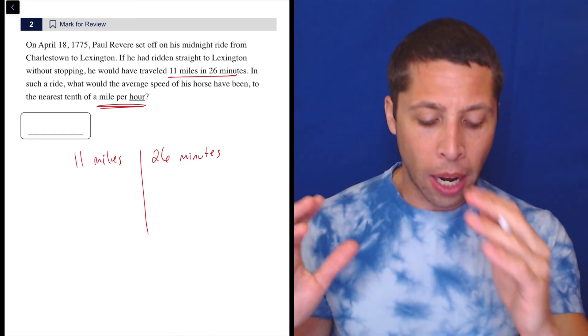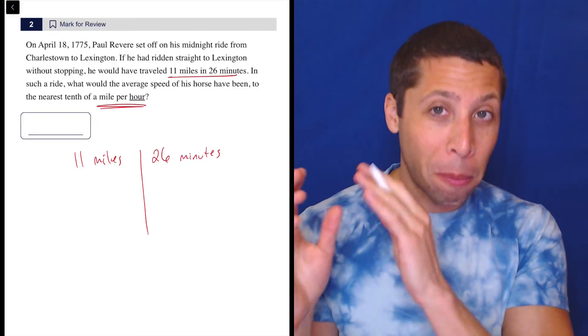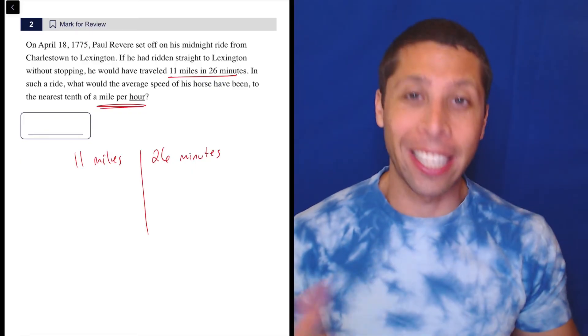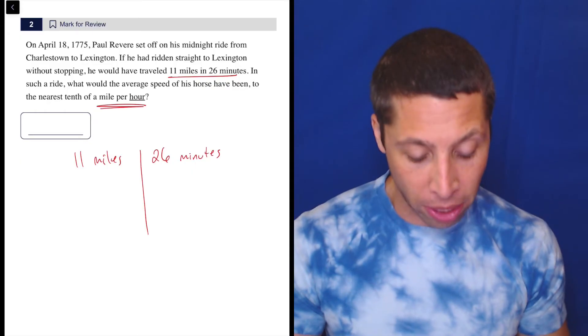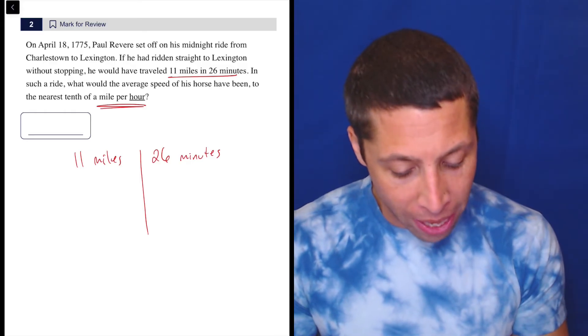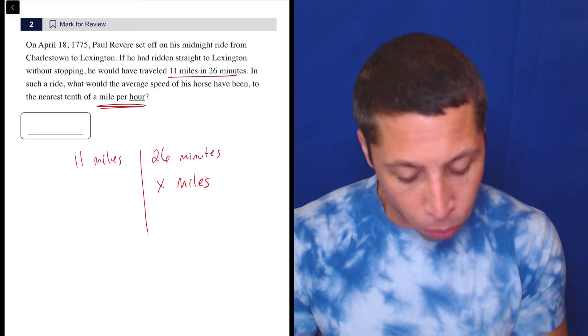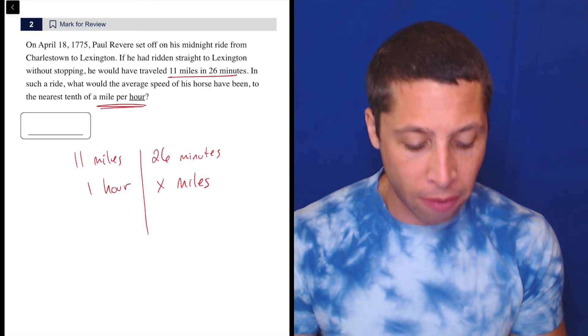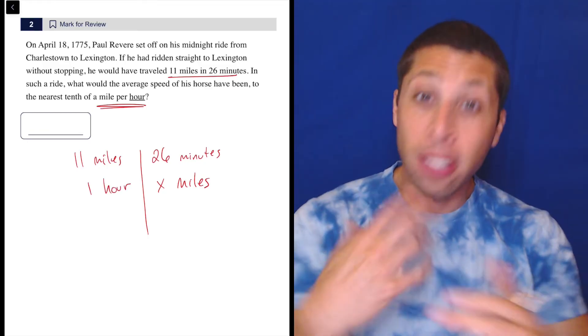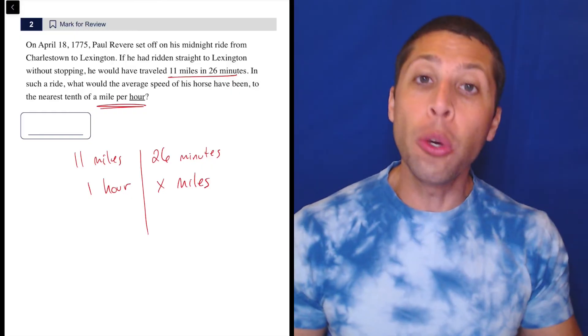So even though you might be tempted to put miles on the left because that's how we're reading it left to right, remember, we got to make sure things cross out. So what we have is X miles per one hour. So we also have to be able to convert a speed into almost like two units.